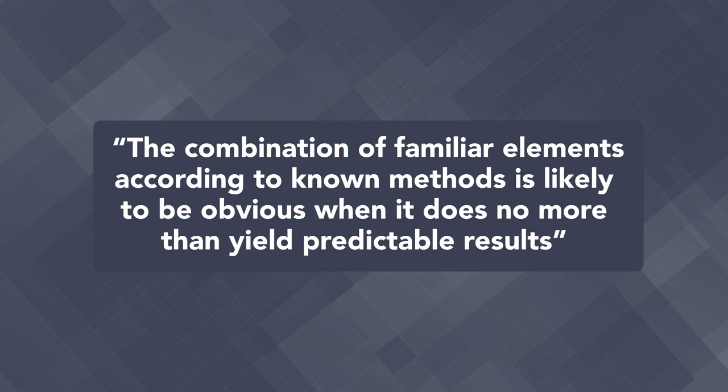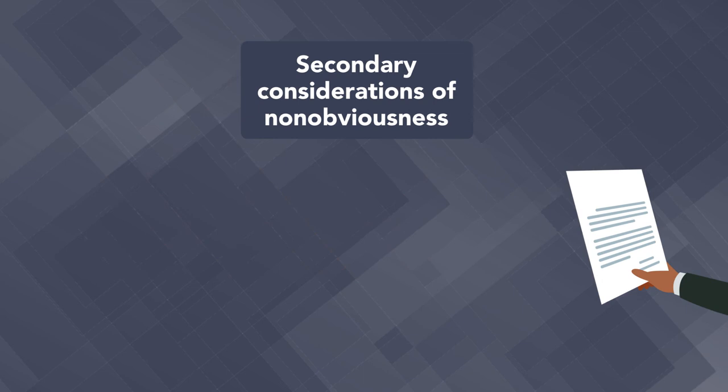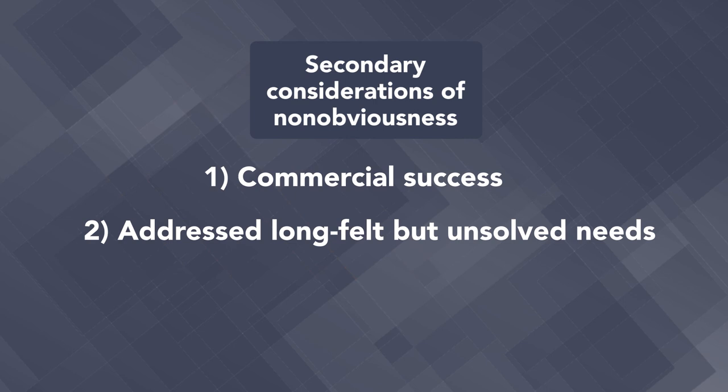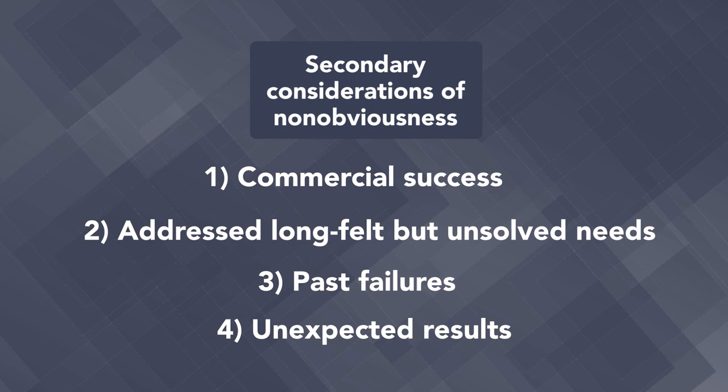Patent examiners must also weigh other evidence relevant to the issue of obviousness, sometimes referred to as secondary considerations of non-obviousness. These secondary considerations include evidence of commercial success, evidence that an invention addressed long-felt but unsolved needs, past failures of others to solve the problem, and unexpected results produced by the invention. In our next module, we'll turn to the patent application process, including discussion of the role of the patent attorney and patent searches, applications, and maintenance.